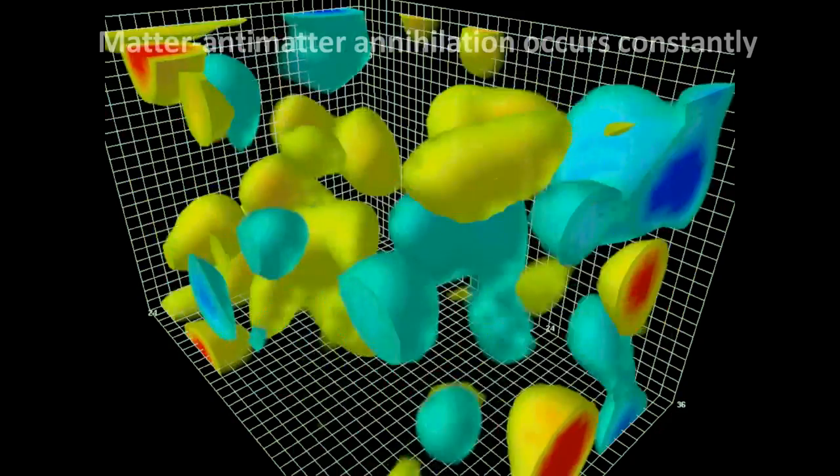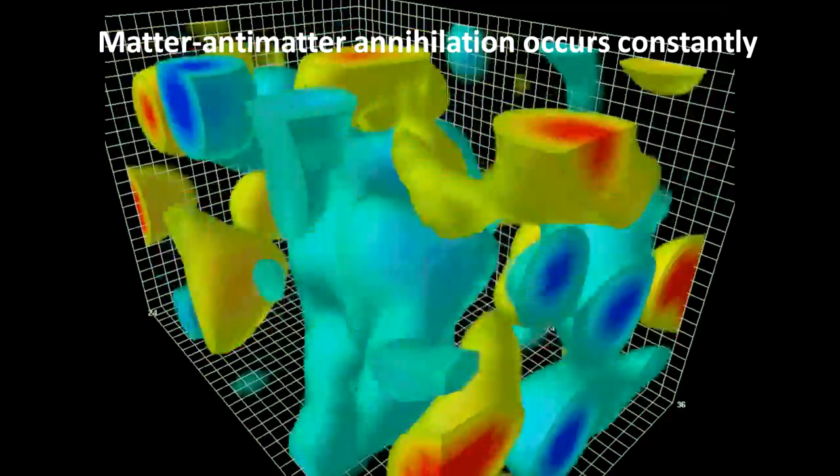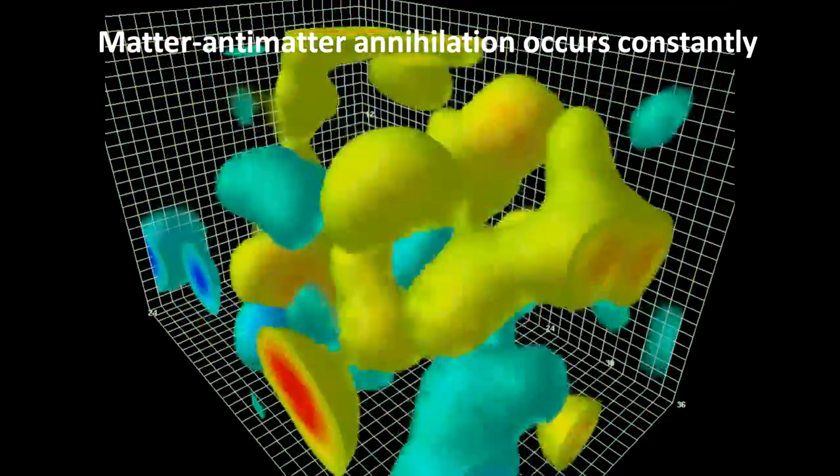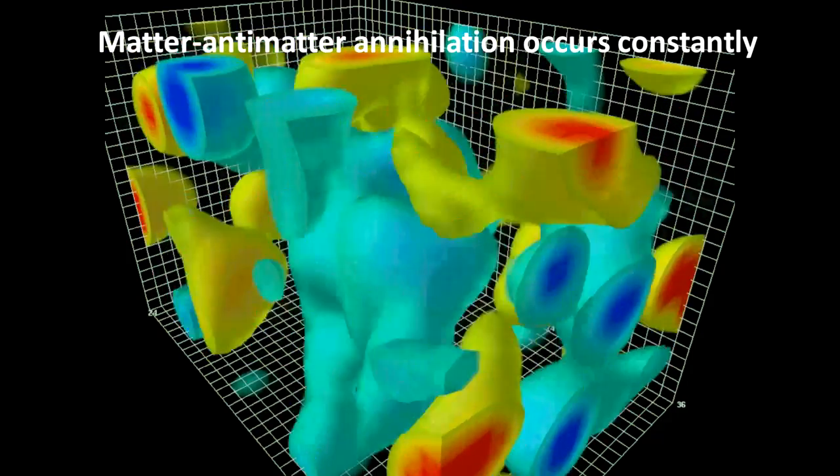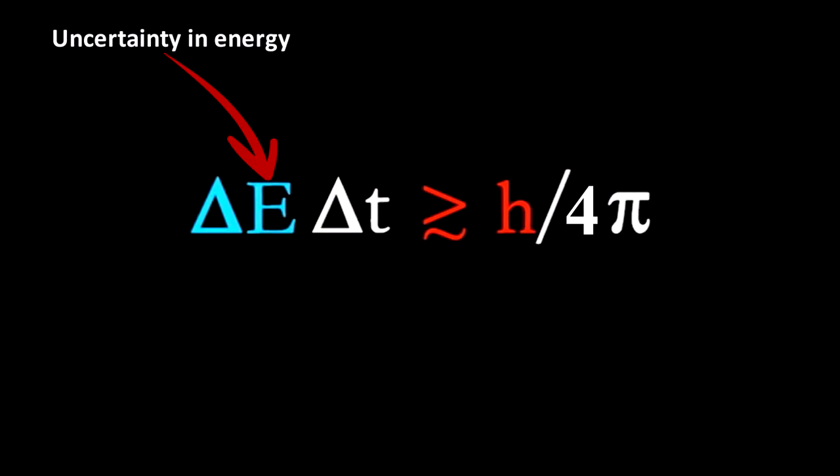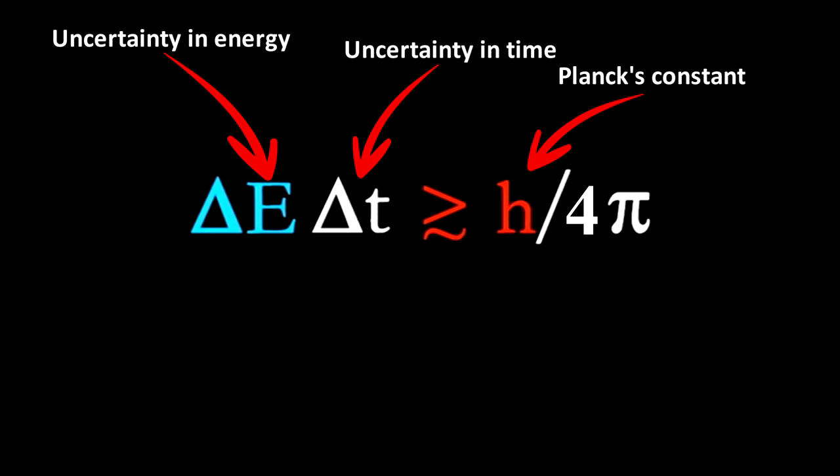So the simplest explanation is this: All of space is teeming with virtual particles that come in and out of existence all the time and everywhere. This is based on the Heisenberg uncertainty principle. One version of the uncertainty principle can be written as the following: delta E times delta T is greater than or equal to H, which is Planck's constant, over 4 pi. So basically what this equation says is that the uncertainty in energy and uncertainty in time are inversely proportional to each other because the product of the two is equal to a constant.